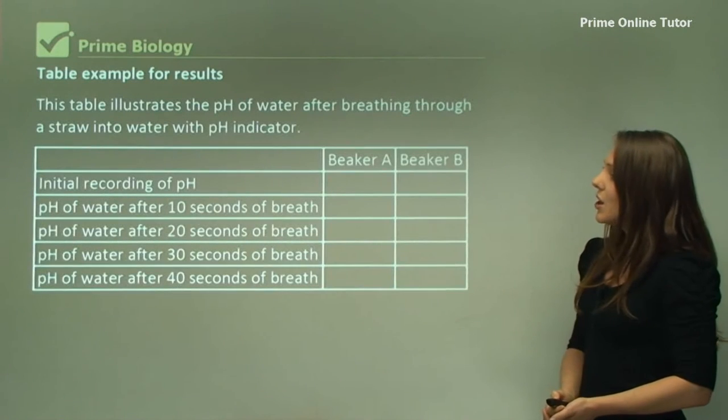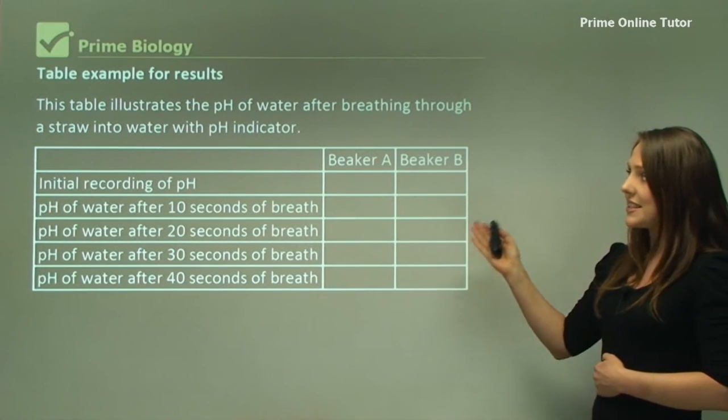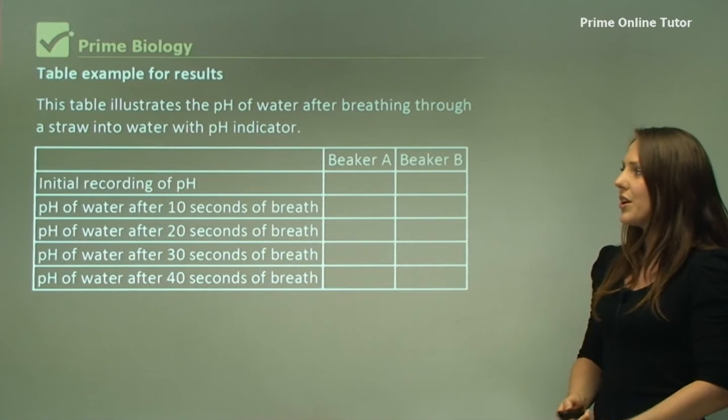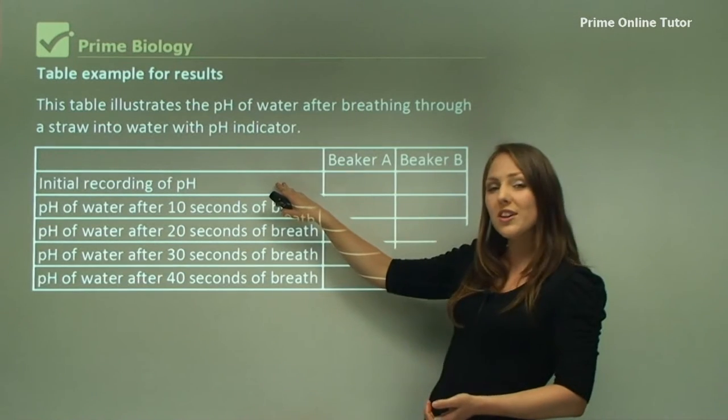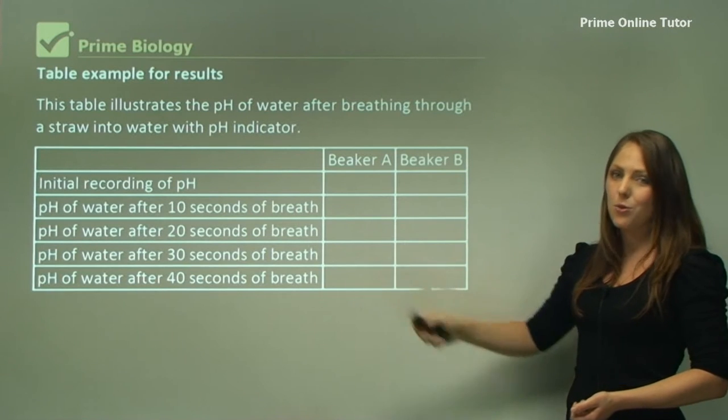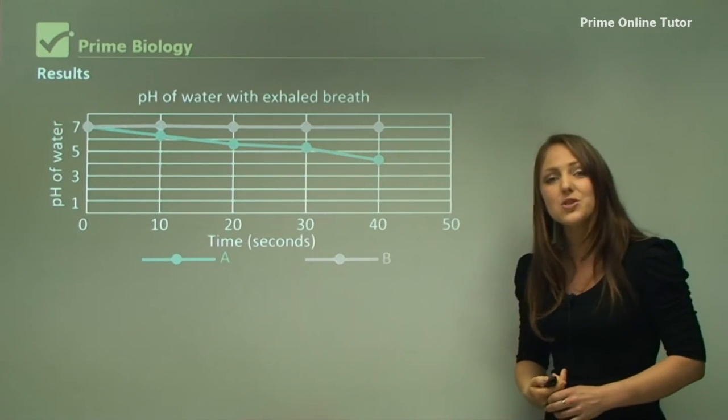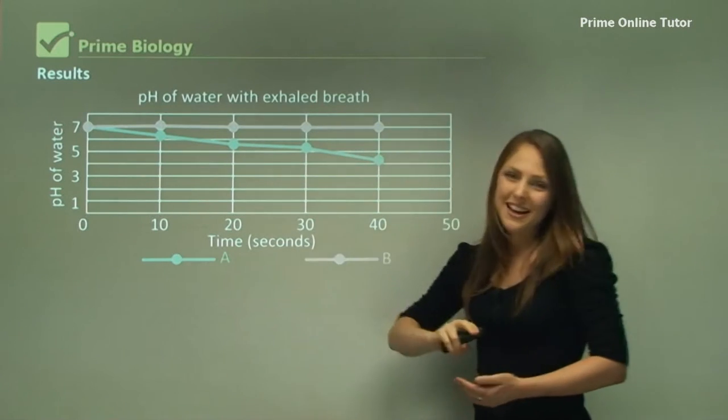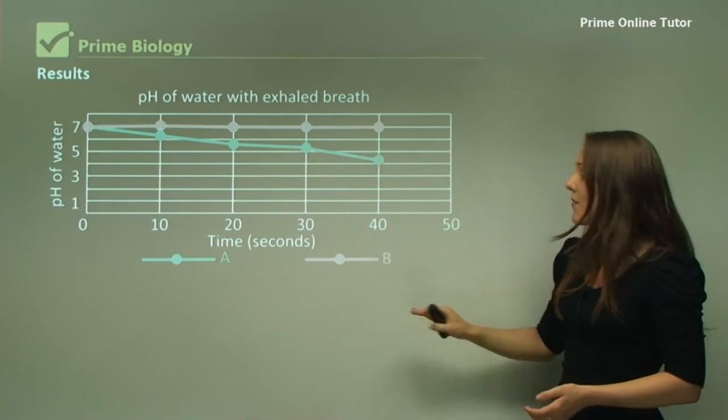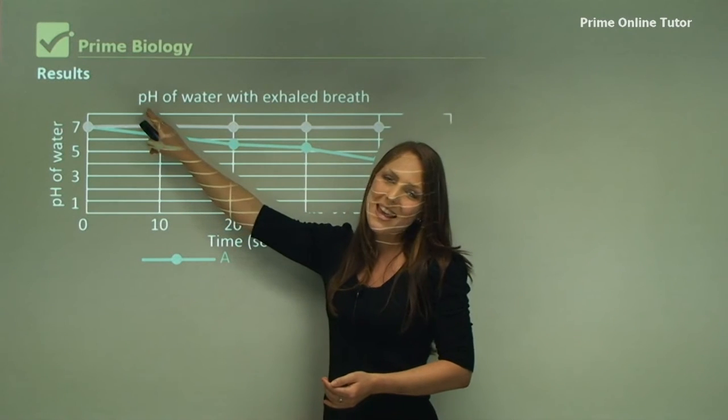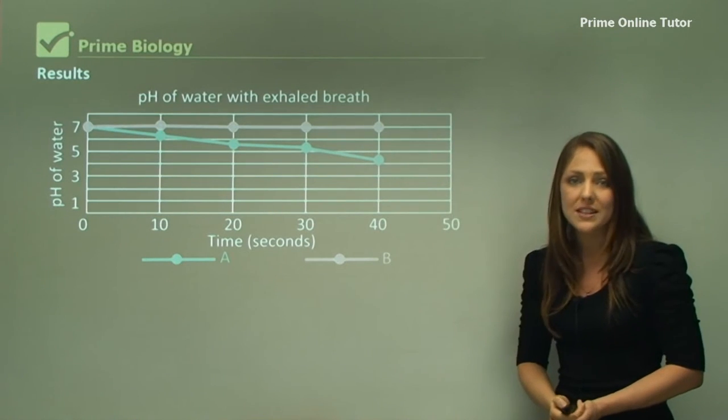This is an example of a table illustrating the pH of water after breathing through a straw into water with pH indicator. We have beaker A and beaker B, with initial recording of pH and readings after 10, 20, 30, and 40 seconds. Beaker A has a pH of 7, which is the pH of water. As we blow into beaker A, you can see there is a decrease in pH. However, beaker B we do not blow into, so the pH actually stays quite consistent. If beaker B was not consistent, then the results would actually be invalid.